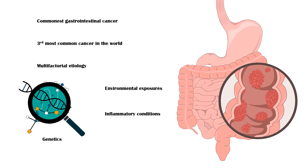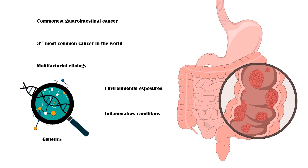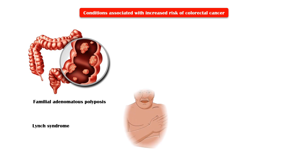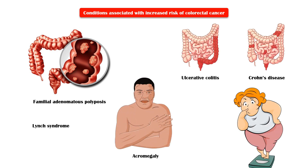Genetics play a significant role in the development of colorectal cancer. Conditions associated with increased risk of colorectal cancer include familial adenomatous polyposis, Lynch syndrome, acromegaly, obesity, and inflammatory bowel disease, which includes Crohn's disease and ulcerative colitis.